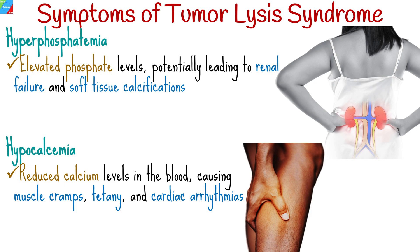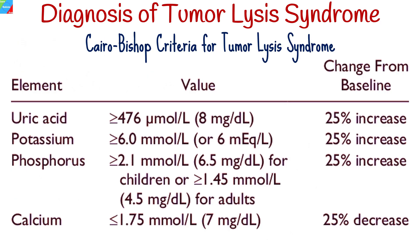Clinical and laboratory assessments are crucial for diagnosing Tumor Lysis Syndrome. Common diagnostic criteria include the Cairo-Bishop criteria, which take into account laboratory values and clinical parameters. Key indicators include elevated uric acid, potassium, and phosphate levels, along with decreased calcium levels. Imaging studies, such as renal ultrasound, may be performed to assess kidney involvement.